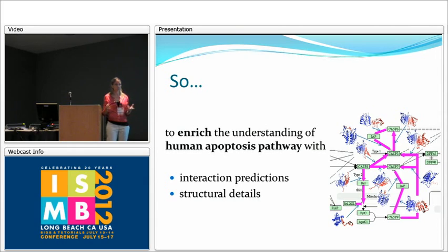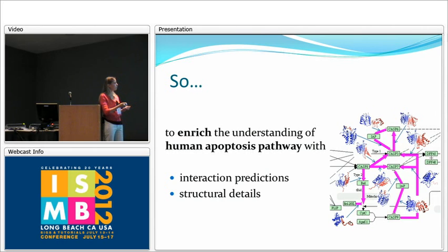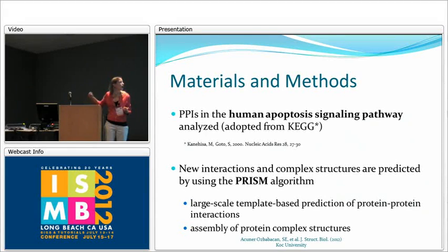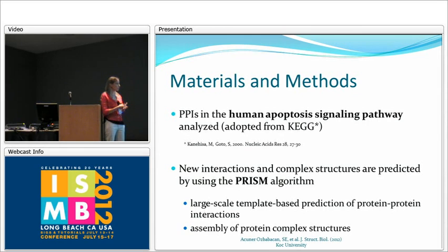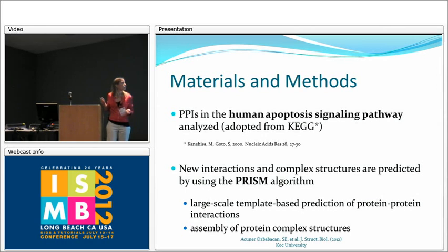Our aim is to enrich the understanding of the human apoptosis pathway structurally by finding protein-protein interactions and predicting the complex structures of these protein complexes. We use the human apoptosis signaling pathway obtained from the KEGG database, and we predict interactions and complex structures using our group's algorithm — the PRISM algorithm. Briefly, it is a large-scale template-based prediction tool of protein-protein interactions and is also used for assembly of protein complex structures.